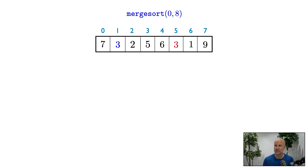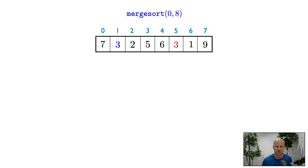I've written the indices of the vector in blue. I'm going to use these indices rather than iterators in writing the calls to merge sort — that just saves some writing, so instead of having to write begin plus 2 I can just write 2. So we want to sort the whole vector, so initially we call merge sort with arguments 0 and 8.